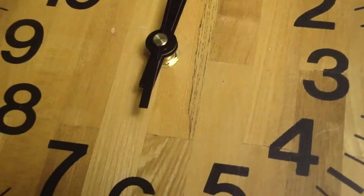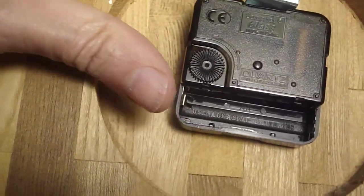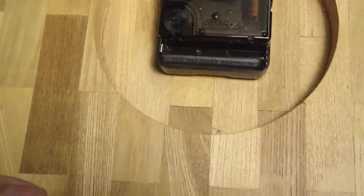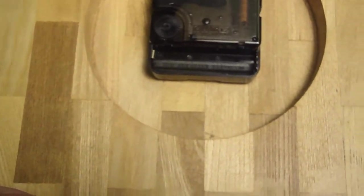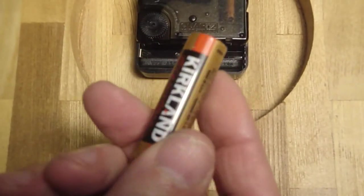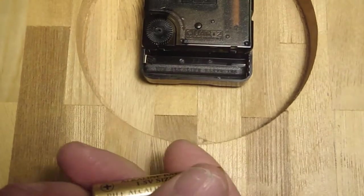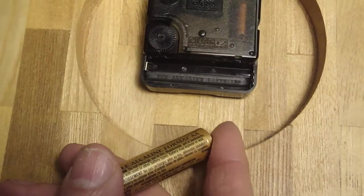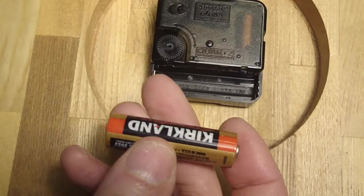Instructions say not to set the time by turning the hands. You have to use this adjusting wheel on the back. The instructions also say to use a carbon pile battery. I don't have one, all I have is alkaline, but I'm dying to try it. Okay, positive goes to the right.